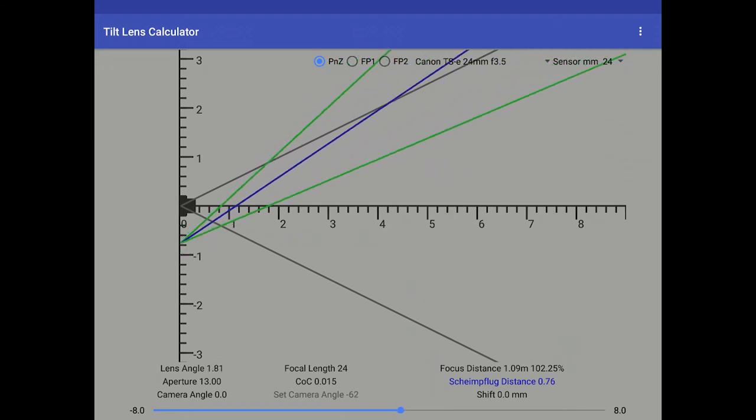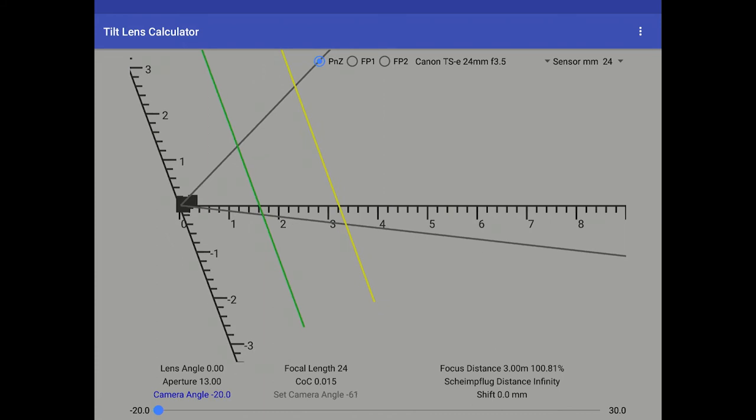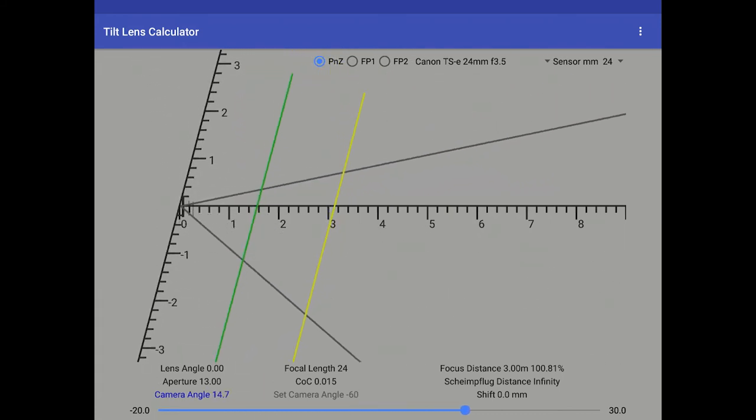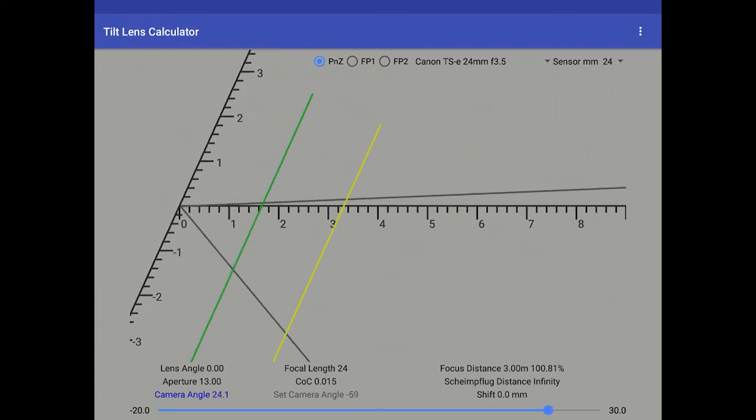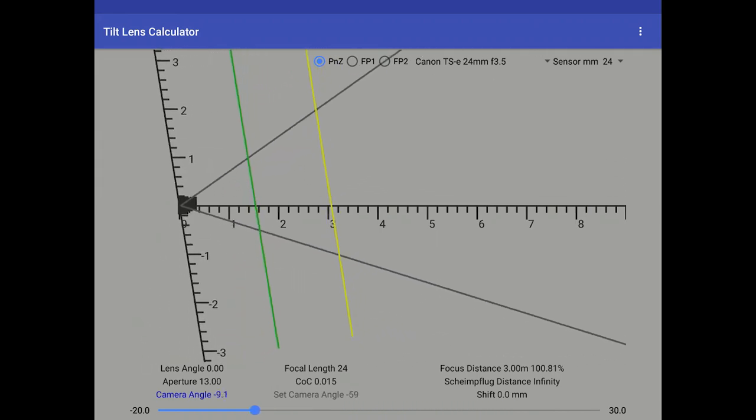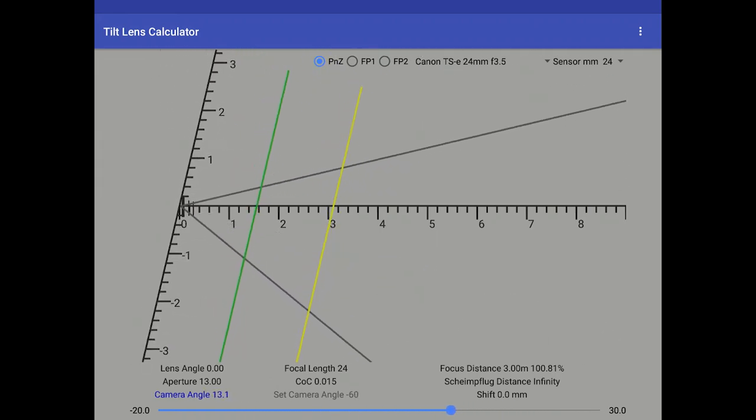So camera angle. This enables you to change the actual physical angle of the camera. So it goes from minus 20 degrees, so if it's tilting upwards, to 30 degrees down towards the ground. And as you can see, the field of view and focal planes will change accordingly.